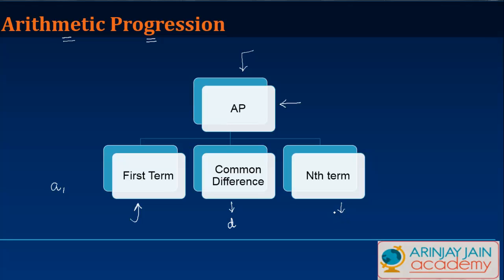Basically in this video, I am going to explain what each of them means. What is an arithmetic progression? What do you mean by the first term? What is the common difference? What is the nth term? And how do all these three correlate together to form an arithmetic progression.